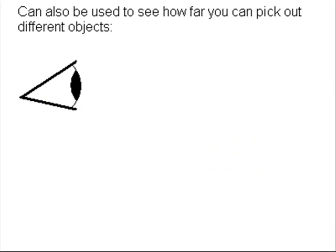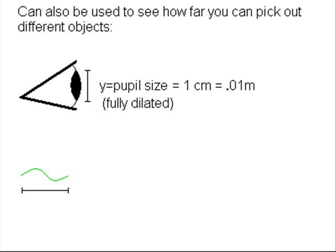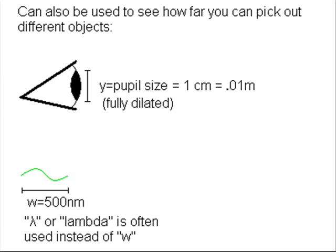We can also use this for other optical instruments, like our eye. If we assume that our aperture size is our pupil size, and that it's fully dilated, and it's about 1 centimeter when it's fully dilated, and wavelength is still 500 nanometers,